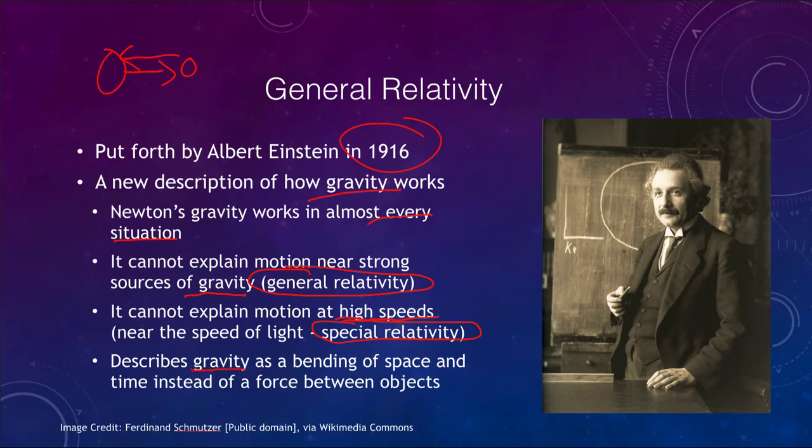So let's look at what general relativity does do. Instead of being a force between two objects, it describes gravity as a bending of space and time. So space and time are bent, and then objects move around in this bent spacetime.